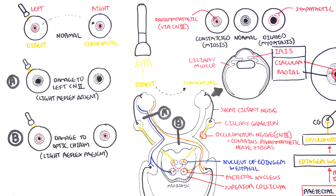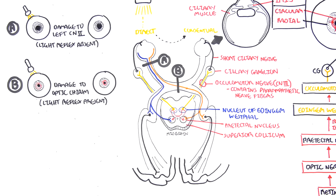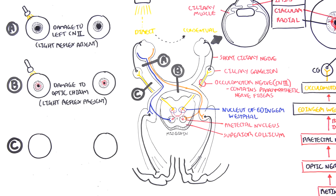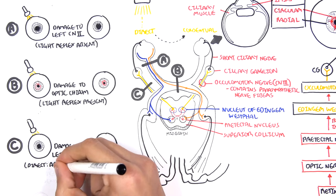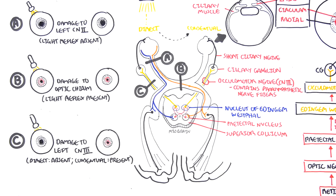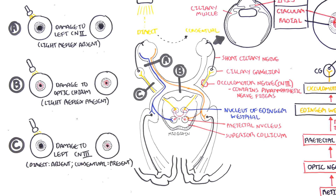What happens if you have a lesion on the left oculomotor nerve? When you shine light on the left eye, information is still being received by the midbrain and the nucleus of Edinger-Westphal, but the output — the oculomotor nerve on the left side — is not working. Therefore, you won't see any constriction on the left side. Damage to the left oculomotor nerve results in the direct light reflex being absent but the consensual response being present — no constriction on the left, but constriction on the right because the right oculomotor nerve is still working.